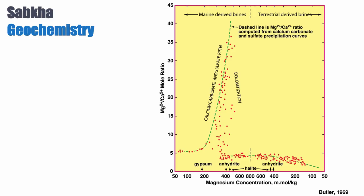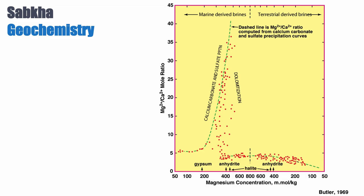If we look at the chemistry of what happens in the sabkha, we have this diagram. On the vertical axis we have the mole ratio of magnesium over calcium, and on the horizontal axis we have the concentration of magnesium in millimoles per kilogram in the fluid. We have two types of sabkha: the coastal sabkha with marine-derived brines shown on the left, and the terrestrial sabkha with terrestrial-derived brines — in other words, coming from fresh water.